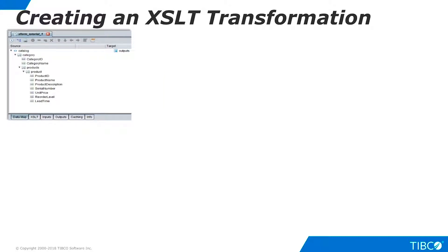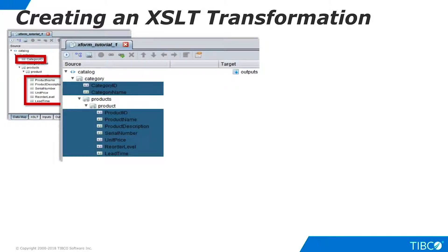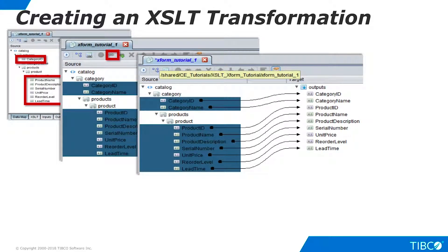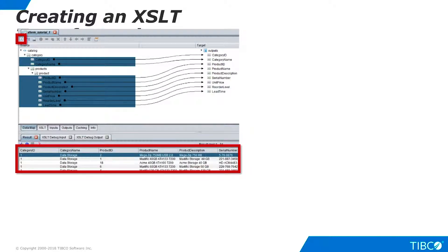The XSLT editor appears. Expand the source and examine its structure. Notice that wrapper tags appear with folder icons, while leaf-level data tags appear with icons indicating their data types. Since we are flattening this hierarchical structure, we don't want the wrapper tags. Select only the data items using Ctrl-click and or Shift-click. On the toolbar, click the Create Link and Target icon. The flat output structure is created. Execute the transformation to verify that a flat relational structure is returned. Notice that CategoryID and CategoryName fields, which were at a higher level in the original hierarchy, are repeated for each leaf-level row in the new flat structure.